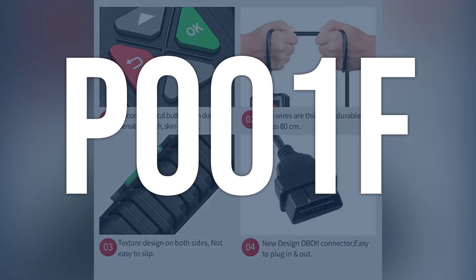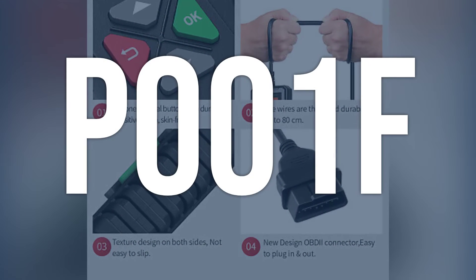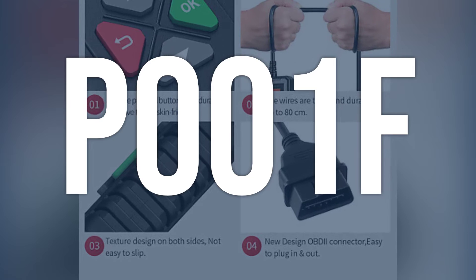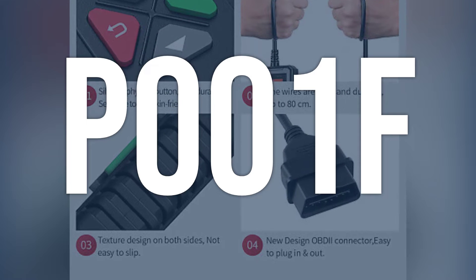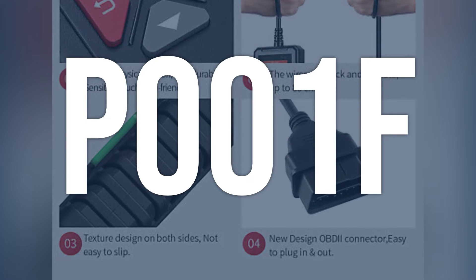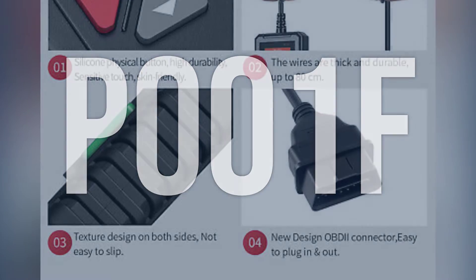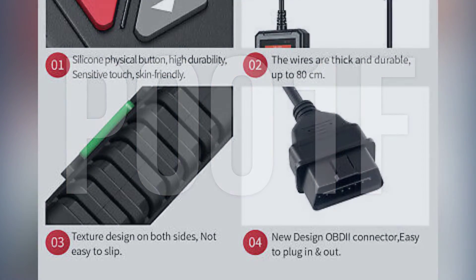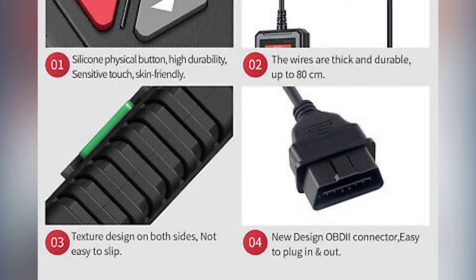OBD2 fault code P001F means that the engine control module has detected that the valves are not being operated as desired, which can lead to decreased engine performance.